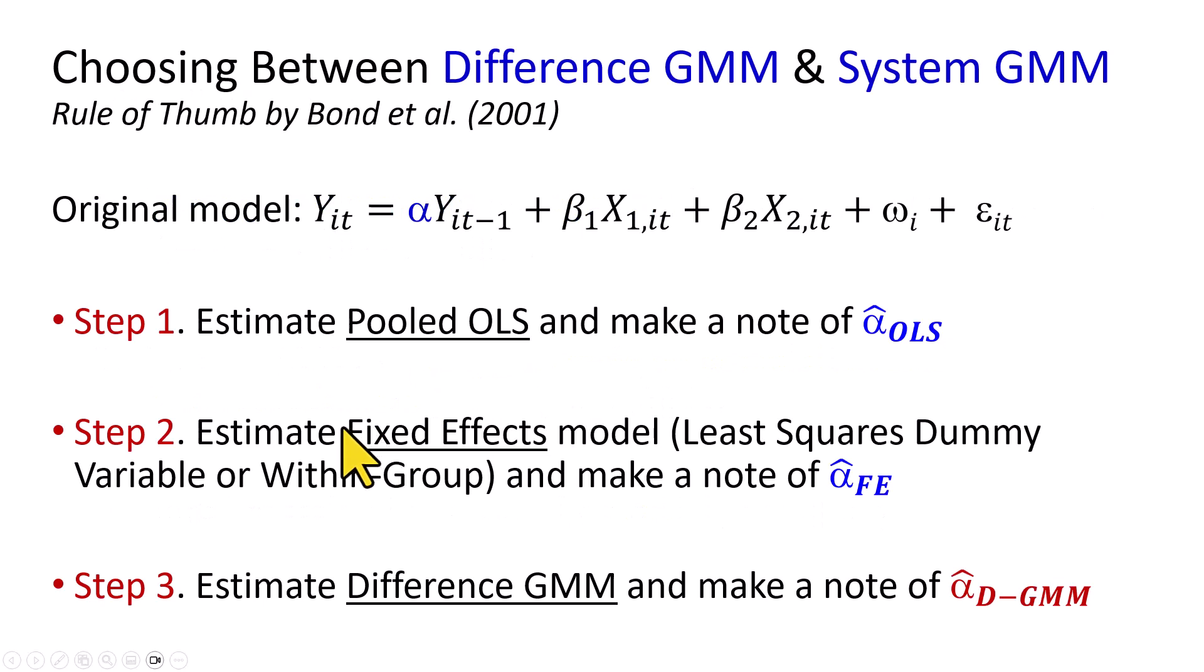And so how do we choose between the two estimators, difference GMM and system GMM? The rule of thumb proposed by Bond, which I explained in the preceding video, is that we first estimate the original model using pooled OLS, making note of the coefficients of the lagged dependent variable.